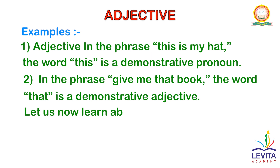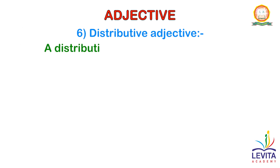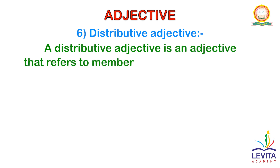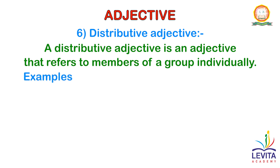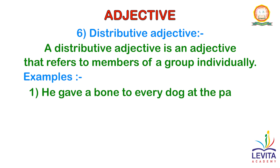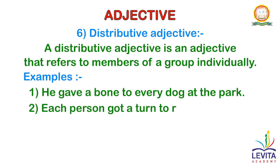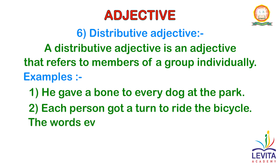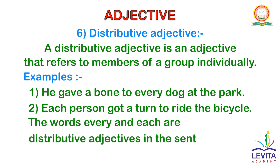Let us now learn about distributive adjectives. A distributive adjective is an adjective that refers to members of a group individually. Examples are: He gave a bone to every dog at the park. Each person got a turn to ride the bicycle. The words every and each are distributive adjectives in these sentences.